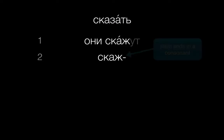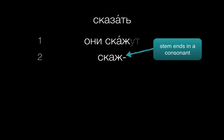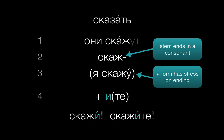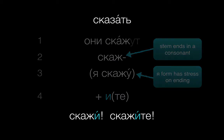Let's try another: сказать. The они form is скажут. We'll drop the ending, and since that stem ends in a consonant, we'll check the stress of the Я form — Я скажу. It's stressed on the ending, so we can just add И to get скажи, скажите. This example shows us why it's so important to use the stem of the они form — we cannot safely get the imperative directly from the infinitive.